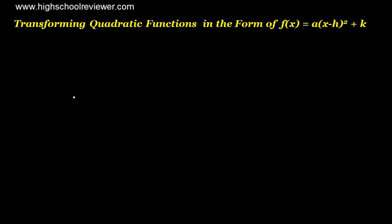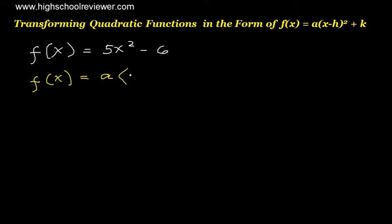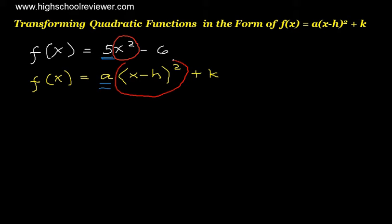Our next example: we have f(x) equals 5x squared minus 6. We will transform this equation in the form of f(x) equals a multiplied by the quantity of x minus h raised to the power of 2 plus k. Looking at the two equations, we can see that 5 will be equivalent to a, x raised to the power of 2 is equivalent to the quantity of x minus h raised to the power of 2, and negative 6 will be equivalent to k.